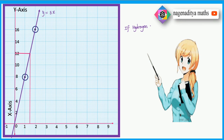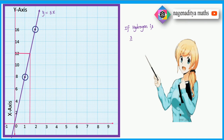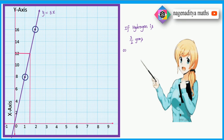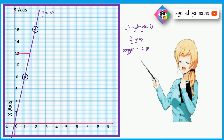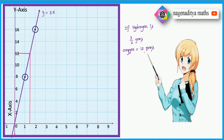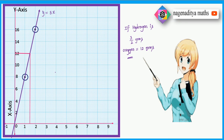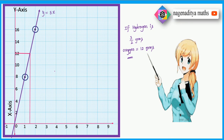If hydrogen is 3/2 grams, oxygen is equal to 12 grams. And if oxygen is 12 grams, hydrogen is 3/2 grams. This is how we can solve this problem. Thank you very much.